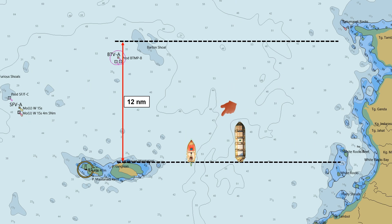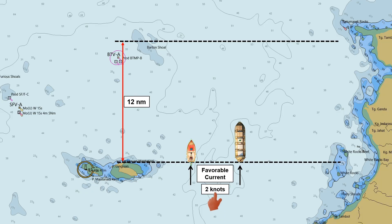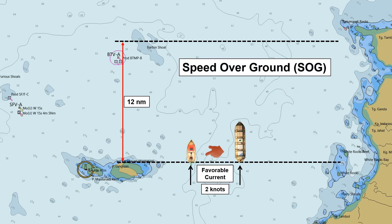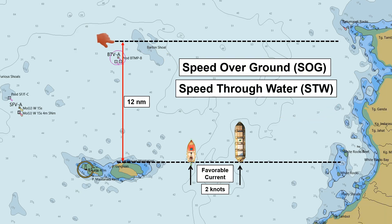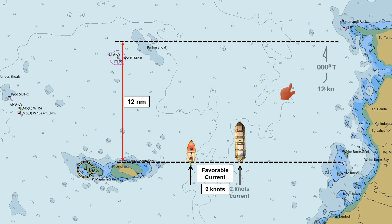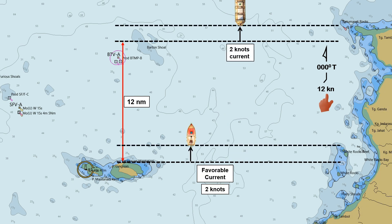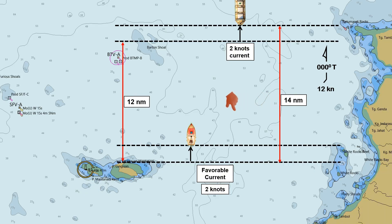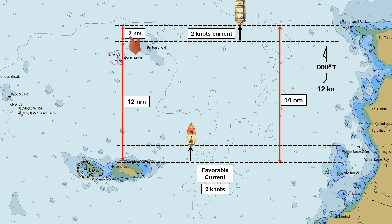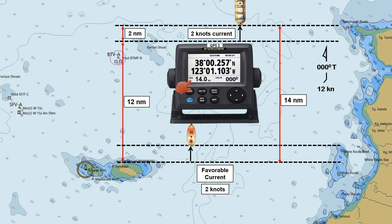Let's move on to the second scenario. In this case, the current is favorable with a speed of 2 knots, coming from aft and pushing the ship forward. We'll use the same reference points — the island to determine speed over ground, and a floating boat to measure speed through the water. The ship is sailing due north with an engine speed of 12 knots. If we measure the parallel distance traveled by the ship from the fixed reference point, it is 14 nautical miles. Compared to the previous scenario where the ship traveled 12 nautical miles, in this case it traveled 14 nautical miles due to the favorable 2-knot current, causing an increase in distance of 2 nautical miles. Therefore, the GPS receiver displayed a speed over ground of 14 knots.